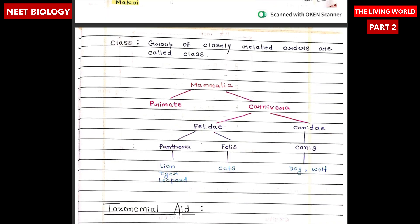Class is a group of closely related orders. For example, Mammalia is a class; Primates and Carnivora are orders; Felidae and Canidae are families; Panthera, Felis, and Canis are genera; and lion, tiger, leopard, cats, dog, and wolf are species.